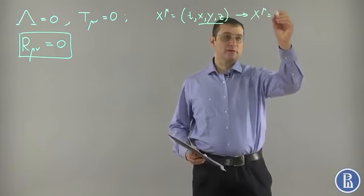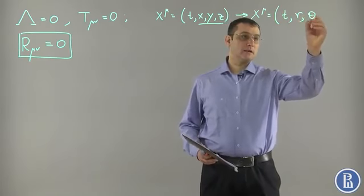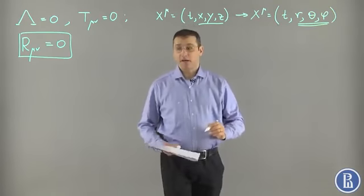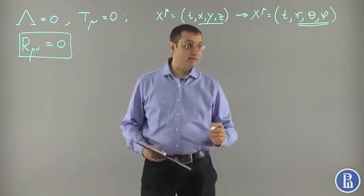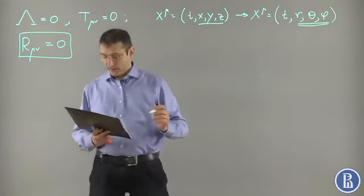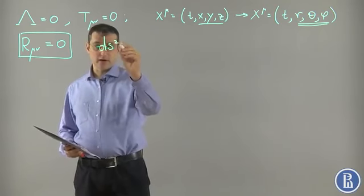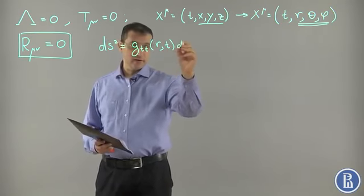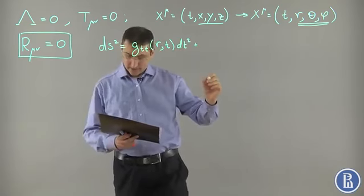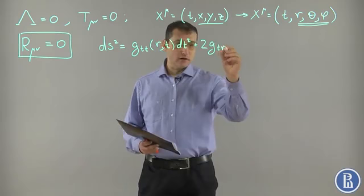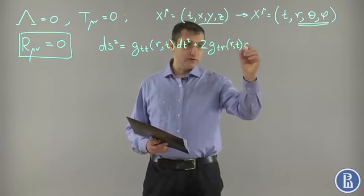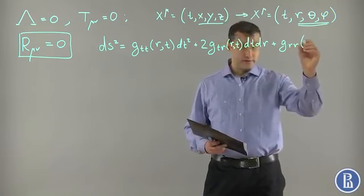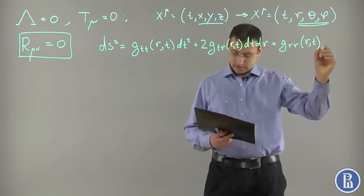We're going to use these coordinates: T, R, theta, and phi. This is the standard spherical coordinates in three-dimensional space. The most general metric which respects spherical symmetry has the following form: ds squared equals g_tt, which is a function of only r and t, dt squared, plus 2 g_tr, which is a function of r and t also, dt dr, plus g_rr, which is again the function of r and t only, dr squared.